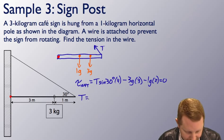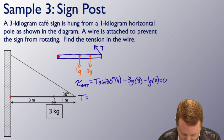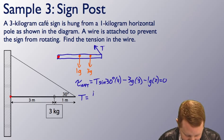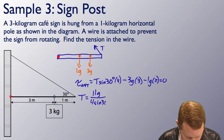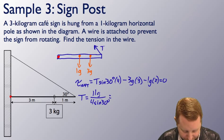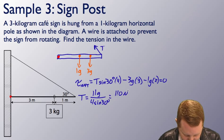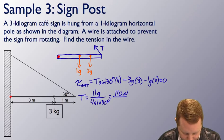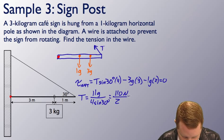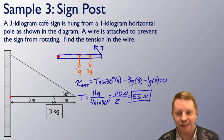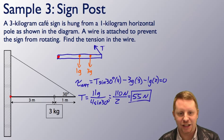So solving for the tension, we've got negative 11g on the other side. That'll be 11g, or 11 times 10 meters per second squared, over 4 sine 30 degrees. So that'll be 11 times 10, or 110 newtons, over 4 sine 30. That's just going to be 2 meters. That'll be 2. So we will get 55 newtons as our force, as our tension in the wire.